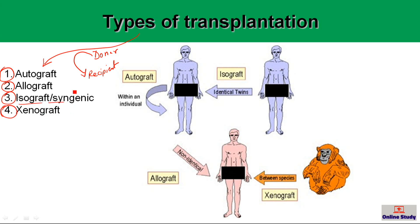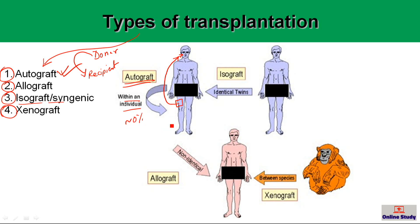An autograft is when an organ or graft is removed from a person and then placed back into the same person. This is very important — for example, when people are burned, especially the face skin, that burned skin can be replaced by skin taken from other parts of the body. In this case, the rejection rate is almost zero, meaning the autografted organ or tissue can survive for the person's entire life.